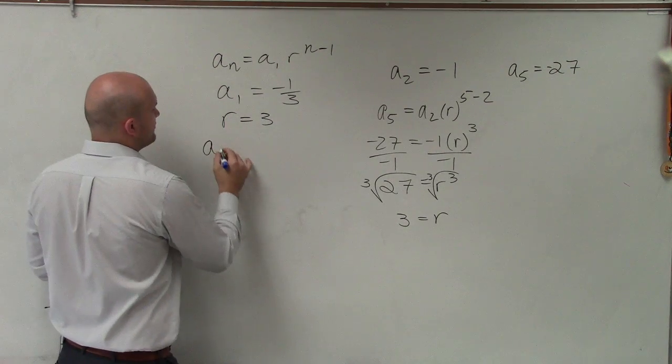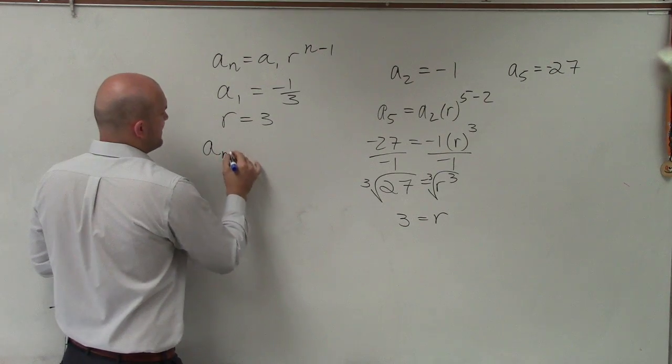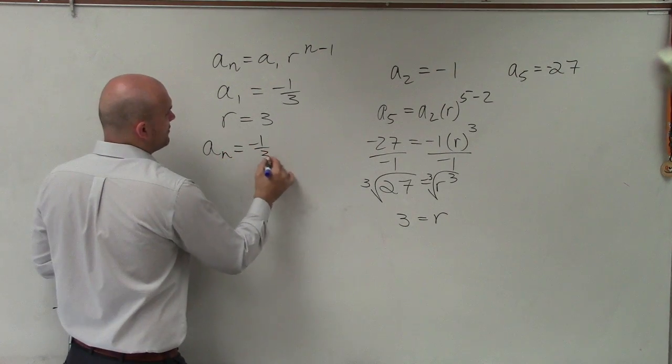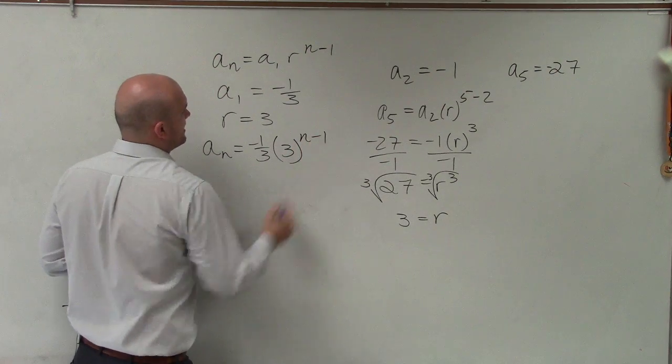Now, let's just plug that information into our formula. A sub n equals negative 1 third times 3 raised to the n minus 1.